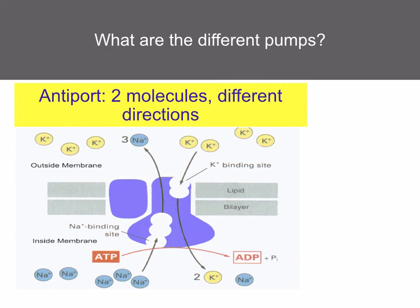An antiport carrier molecule transports two different molecules in different directions. For example, the sodium-potassium pump — in a nerve cell, these pump three sodium ions out and two potassium ions into the neuron. This creates a potential difference across the neuron.